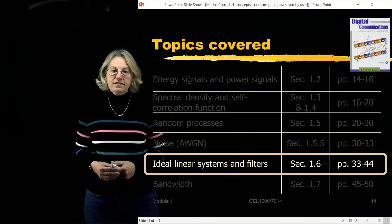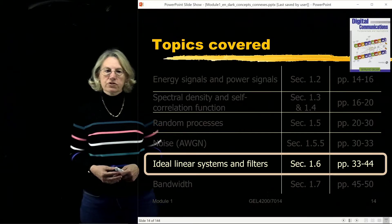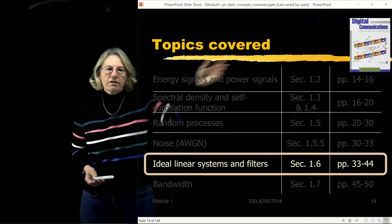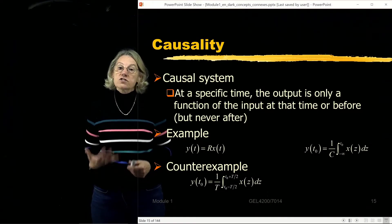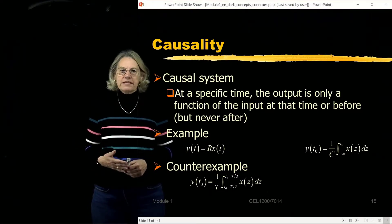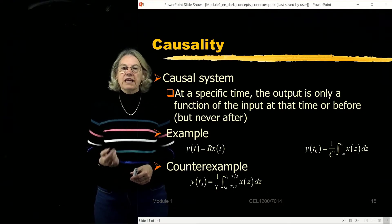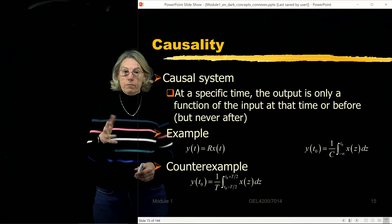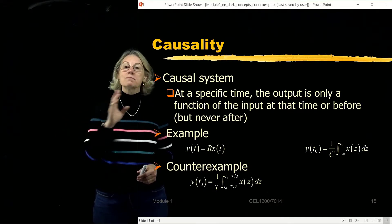These ideas about ideal linear systems and filters are covered in section 1.6 of our textbook from Sklar. I'll start with the definition of a causal system: a causal system is one where at a specific time, the output is a function of the input at that instant or previously, but never a function of what comes after.